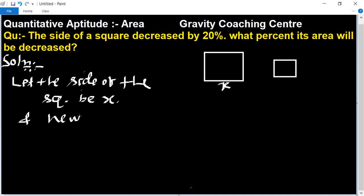New side equal to how much percent decrease? 20% decrease, so 100 minus 20, 80% of x. 80% of x equal to, cancel the zeros, 4 to 0, 4 by 5 x.